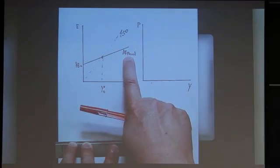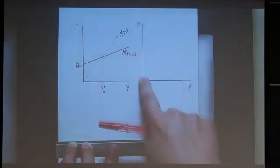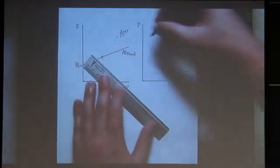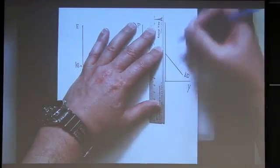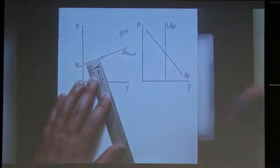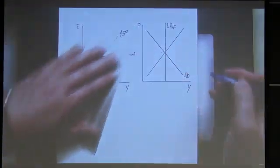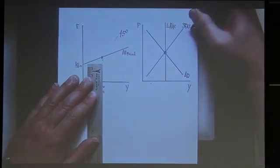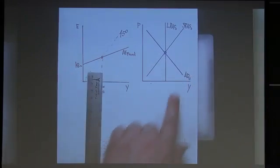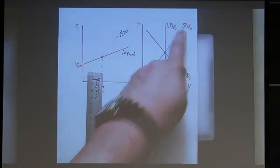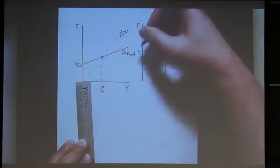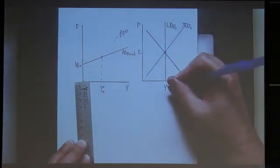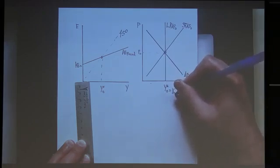Imagine initially there's a planned expenditure line resulting in Y-star-zero as our equilibrium. When we draw this line we're holding frozen autonomous consumption, the interest rate, the aggregate price level, and so on. Maybe the AD curve gives us the initial long-run equilibrium, with our long-run aggregate supply curve, short-run aggregate supply curve SRAS-zero, and initial AD-zero all intersecting at the full-employment level of GDP Y-star-zero.